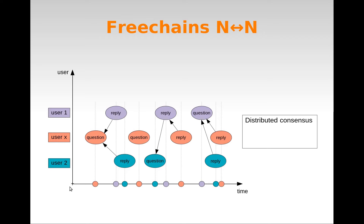Going back to the many-to-many communication in public forums: in FreeChains, to obtain consensus, we only respect the causality relation among posts. For example, a question must always be delivered before its answers. FreeChains will always respect the causal arrows that appear in the graph in all nodes in the network. However, posts without a causality relation can be delivered in different orders.